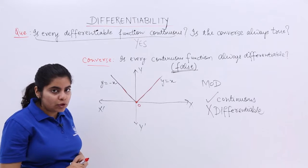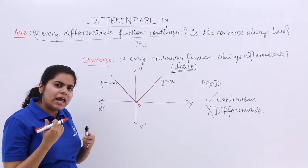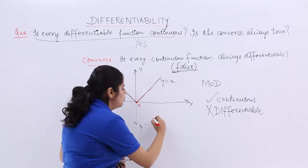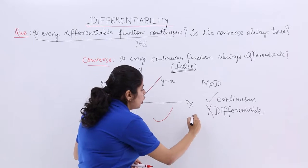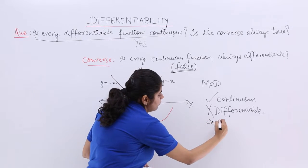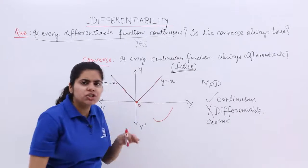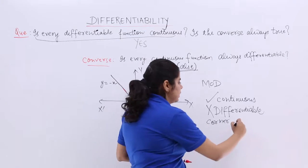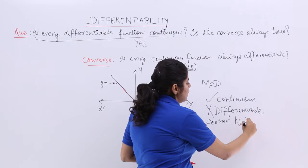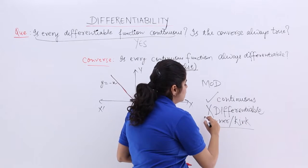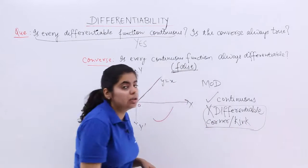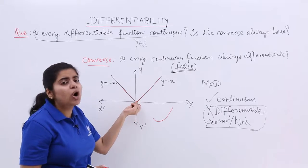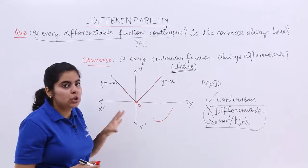The other thing that I want to tell you is that in any graph, in any curve, if it is having a corner or a sharp point or a kink, then that kind of a function will never be differentiable. You see that here, this is a corner or a sharp point, so it is not differentiable.